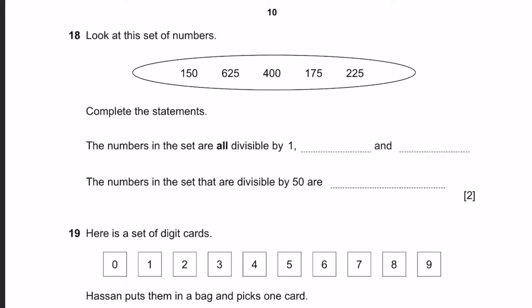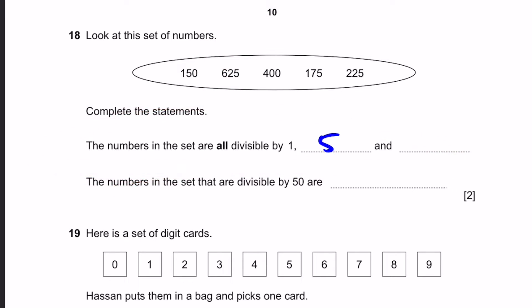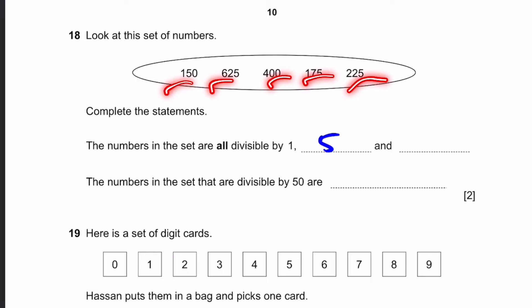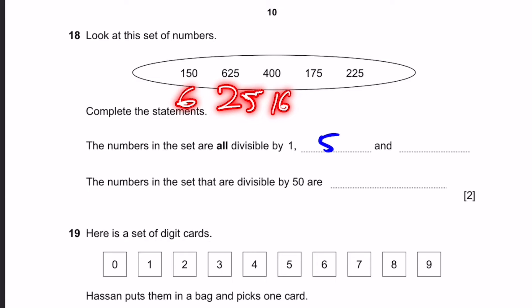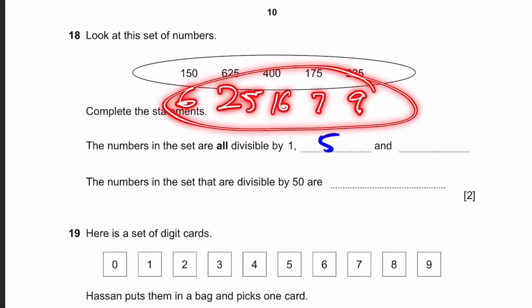Question 18. Look at the set of numbers. Complete the statements. The numbers in the set are only divisible by 1, dash, and dash. All of these numbers are divisible by 5, since they all end with a zero or a five. And there's one more: looking at the set, 625 is 5 to the power of 4. All numbers are divisible by 25. If we divide all of them by 25, we get 6, 25, 16, 7, and 9 — all whole numbers, so they're divisible.